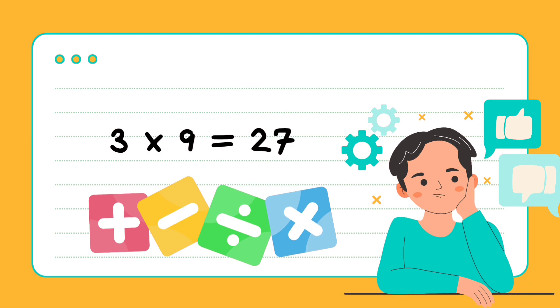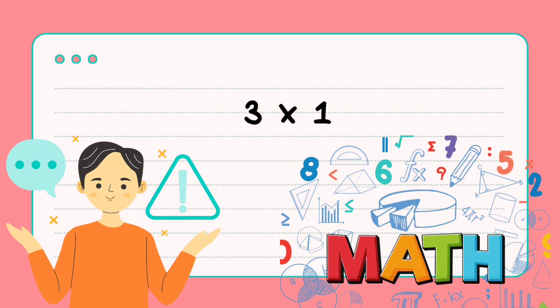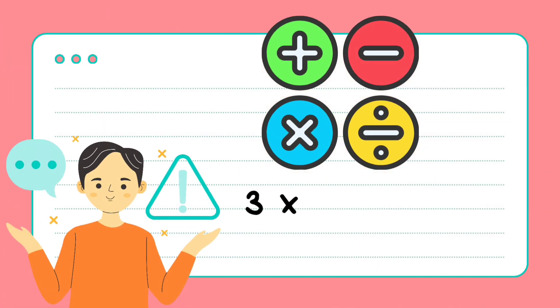3 times 9 is 27. 3 times 10 is 30, clever, clever, clever. 3 times 11 is 33. 3 times 12 is 36, yippee.